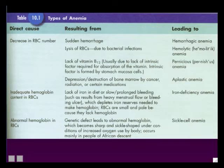Another cause of anemia is chemotherapy — drugs given to stop cells from reproducing as part of cancer treatment. Unfortunately, chemotherapy drugs not only stop cancer cells from reproducing, they also stop red blood cells from being reproduced. It's not uncommon for a person undergoing chemotherapy to become anemic because fewer red blood cells are being produced. In that situation, doctors can give an injection of erythropoietin to tell the bone marrow to make more red blood cells.